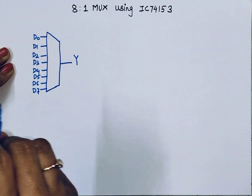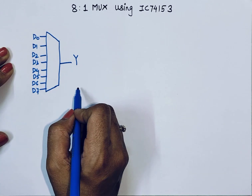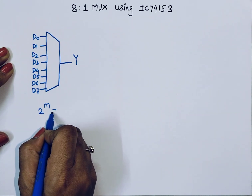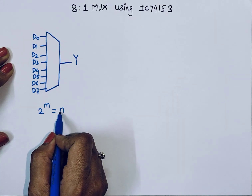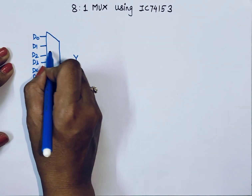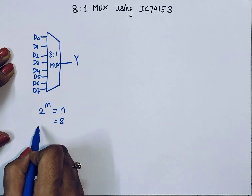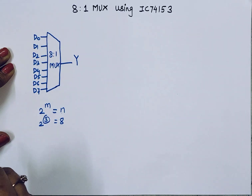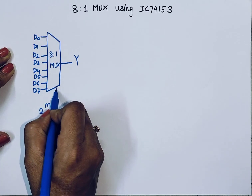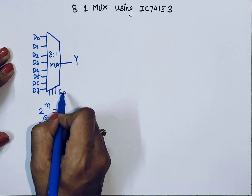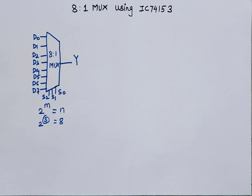In case of a multiplexer, it has data inputs, outputs, and selection inputs. The relationship between select inputs and data inputs is 2 raised to m equals n, where m is the number of select inputs and n is the number of data inputs. For an 8-to-1 MUX, 2 raised to 3 equals 8, so the number of select inputs are 3: S0, S1, and S2.